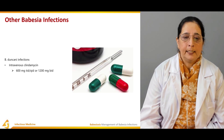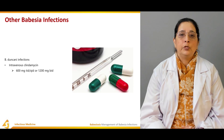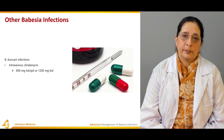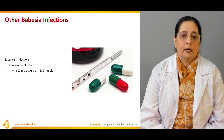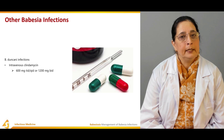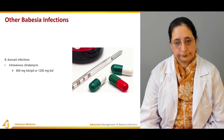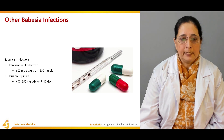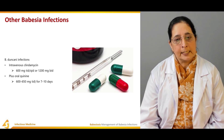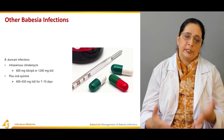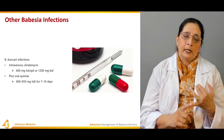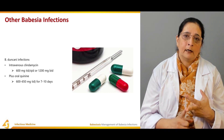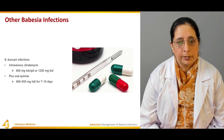For Babesia duncani infection, intravenous clindamycin 600 mg three or four times daily, or 1200 mg twice daily, plus oral quinine 600 to 650 mg for 7 to 10 days is used. Overall, exchange transfusion and clindamycin/quinine are the most commonly used treatment options.